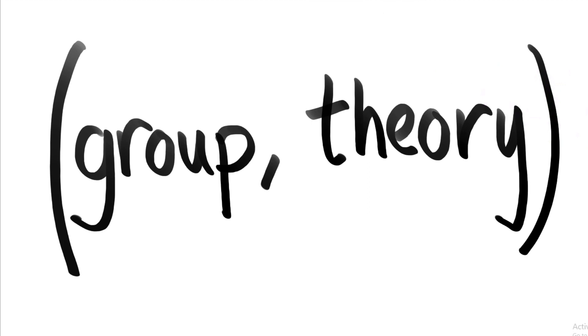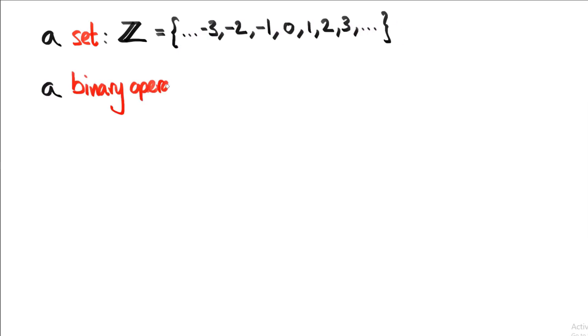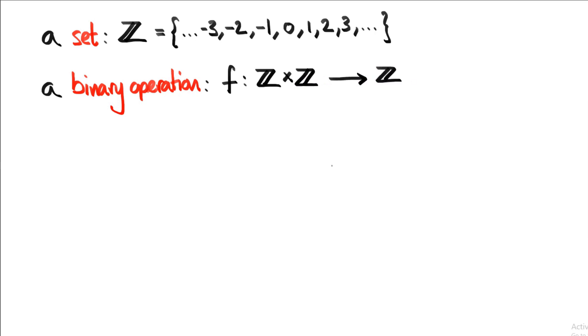What is a group? A group is a combination of two things. It's a set — for example, we can take the set of integers, which is all of the whole numbers — together with a binary operation. A binary operation is a function that goes from the Cartesian product of that set with itself back into the same set. What that means is we have a function that takes in two numbers from the set of integers, combines them in some way, and spits out another number that is also an integer.